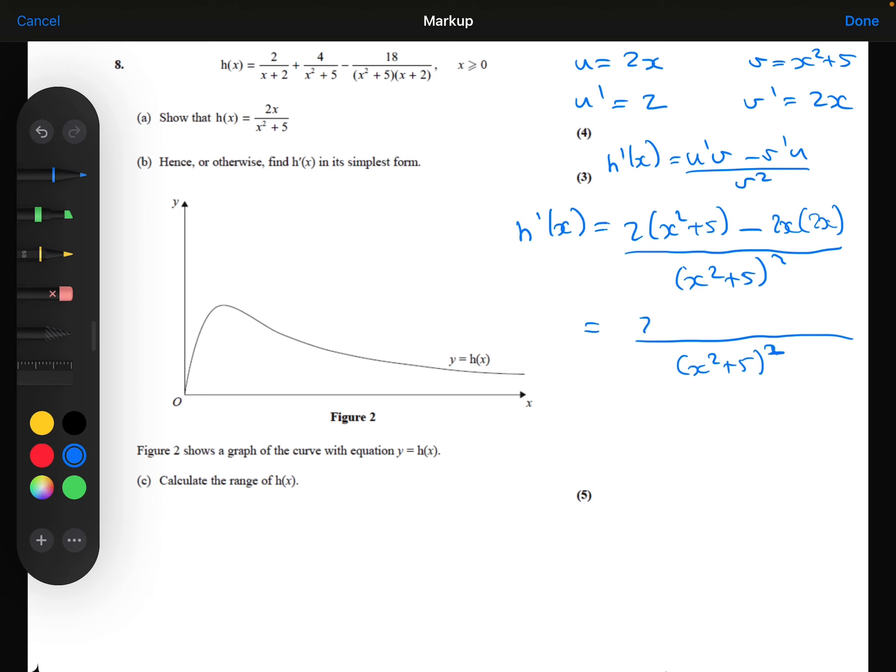Expanding the brackets on the numerator, then we get 2x squared plus 10 minus 4x squared, which will become 10 minus 2x squared over the x squared plus 5 all squared. And that's my answer for part B.